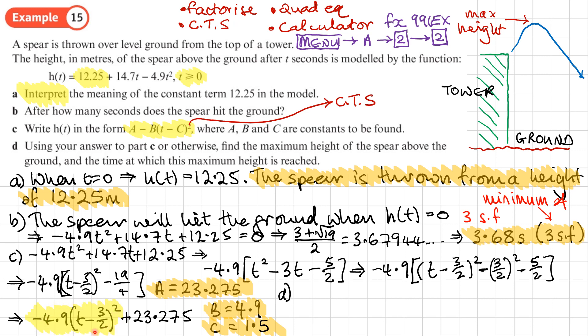So if we can make this first part 0, then we're not going to be taking anything away from 23.275. So first of all, the maximum height, the maximum value of h(t), is 23.275 metres. That's the maximum value of that whole expression, because I'm never going to be adding anything to it, I'm only going to be taking away unless I make this whole part here 0. I won't be taking anything away if I can make the bracket 0, and I can make the bracket 0 when t is 3/2. So that maximum height is going to occur when the time is 3/2 seconds or 1.5 seconds.